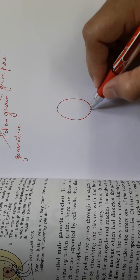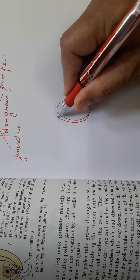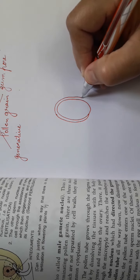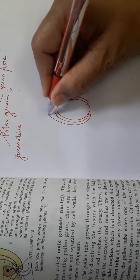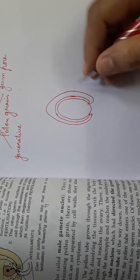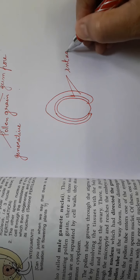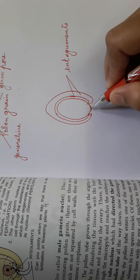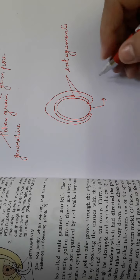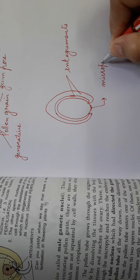The ovule also has two protective layers — we call them integuments. These integuments are open at one end, and that opening is called the micropyle. You have learned this previously. The micropyle is the opening of the ovule.